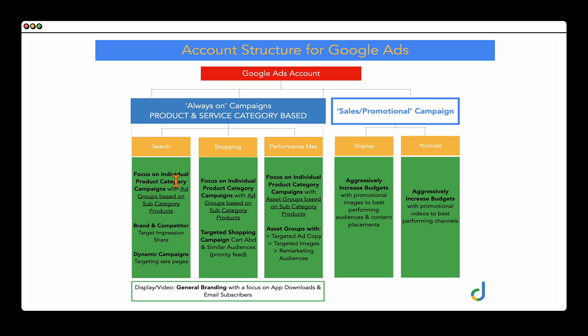For an e-commerce store, you'd have different product category campaigns. For larger stores with clear product categories — like men's clothing, women's clothing, children's clothing, and infant and baby clothing — I might have five or six different Performance Max campaigns, each with their own ad groups or asset groups underneath. For a service-based business, like an electrician focusing on air conditioning, general electrical repairs, and solar, you'd break those into three different campaigns: air conditioning, general electrical work, and solar.